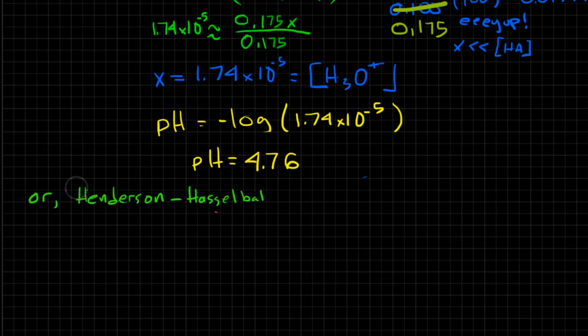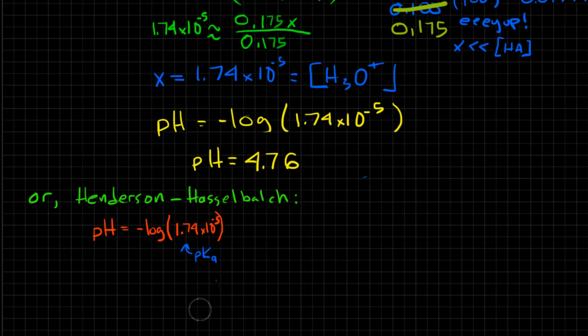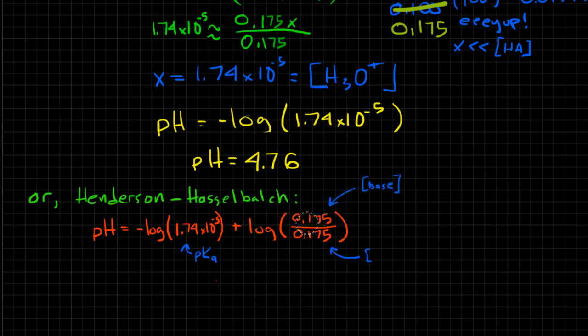Let's compare what we get with the Henderson-Hasselbalch equation. The pH here is going to be equal to the negative log of 1.74 times 10 to the negative fifth. This is the pKa value. It works the same way as pH. I'm going to add that to the logarithm of the concentration of my base over the concentration of my acid. This works out to be pretty easy because what's the log of 1? Zero. So our pH is 4.76.